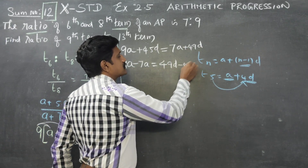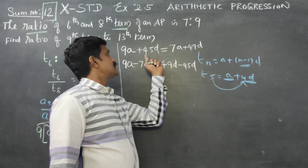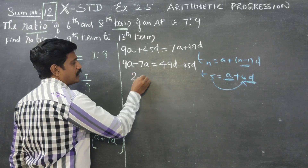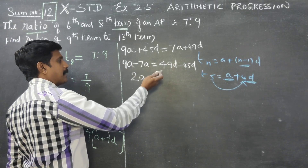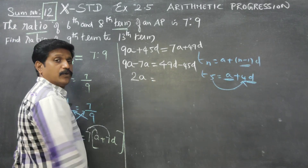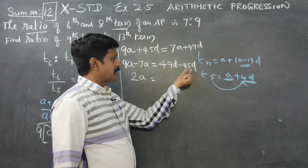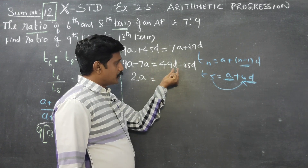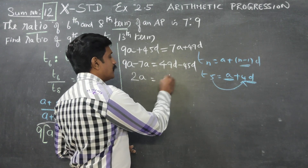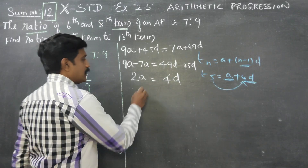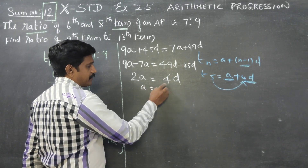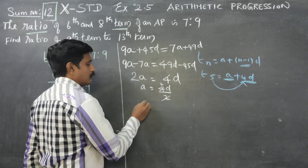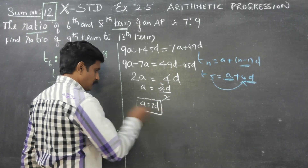After expanding both sides: 9A plus 45D equals 7A plus 49D. So 9A minus 7A equals 49D minus 45D, giving 2A equals 4D, therefore A is equal to 2D.